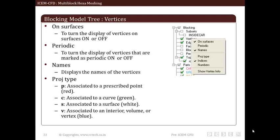By enabling project type displays all associated vertices whether it is associated to point, curve or surface. They are tagged as T for point association with red color, C for curve association with green color, S for surface association with white color, V for interior vertices with blue color. This color code helps us to ensure association is done.